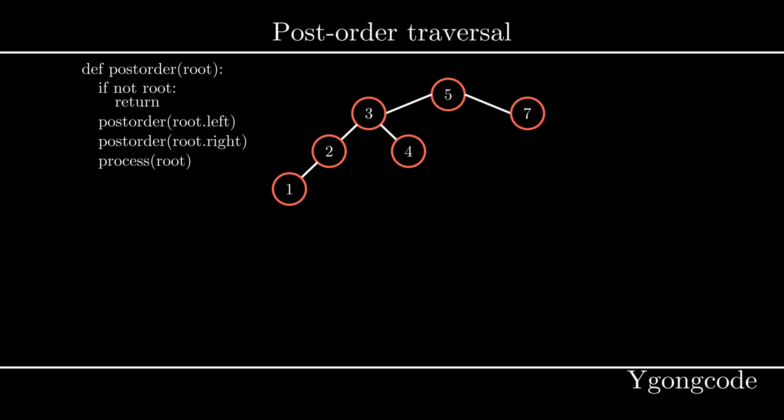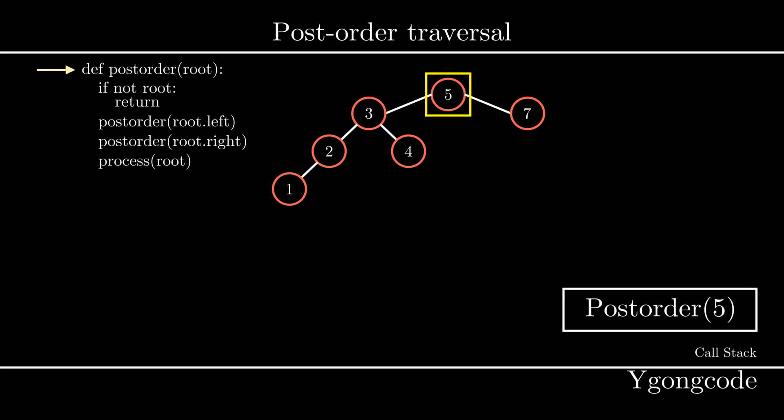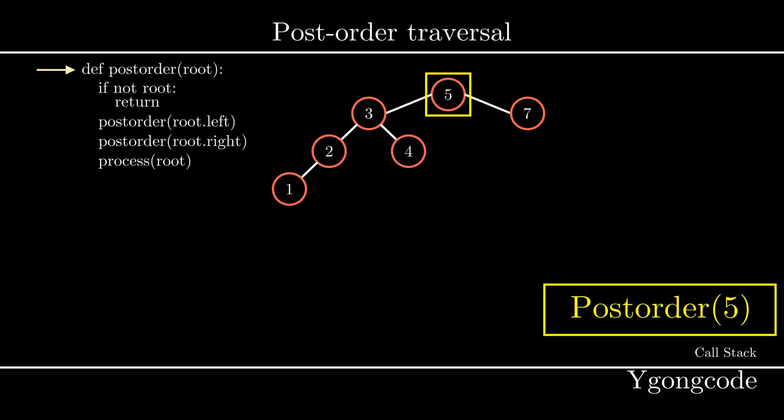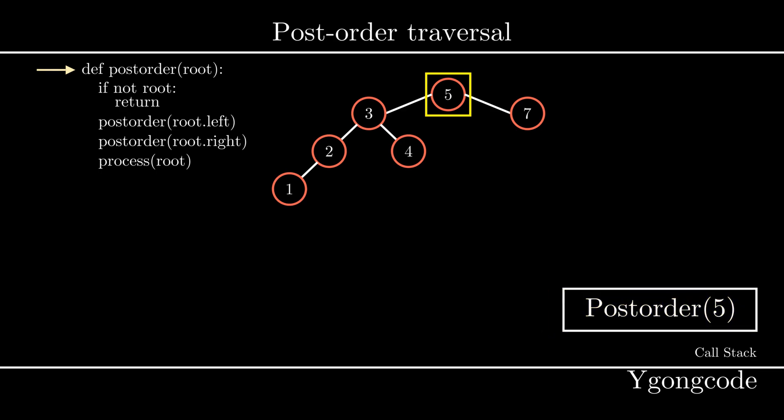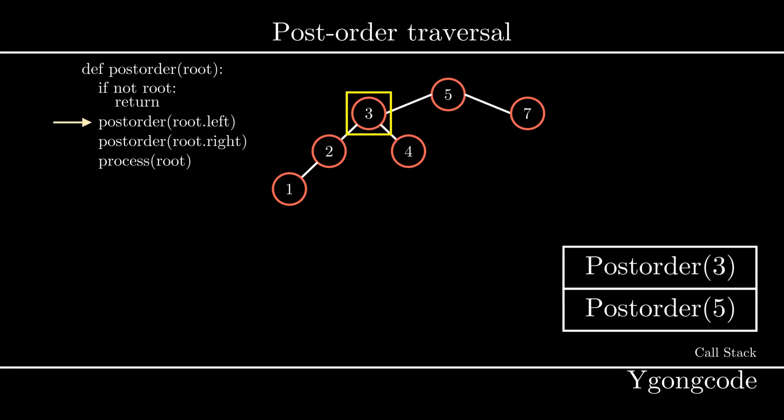Let's visualize this traversal on the following tree. First, we start the traversal from the root of the tree, which is marked as 5, so we call post-order(5) and push it onto our call stack. We execute the top of the call stack, which is post-order(5), and then recursively call its left subtree node 3, pushing post-order(3) onto the call stack.